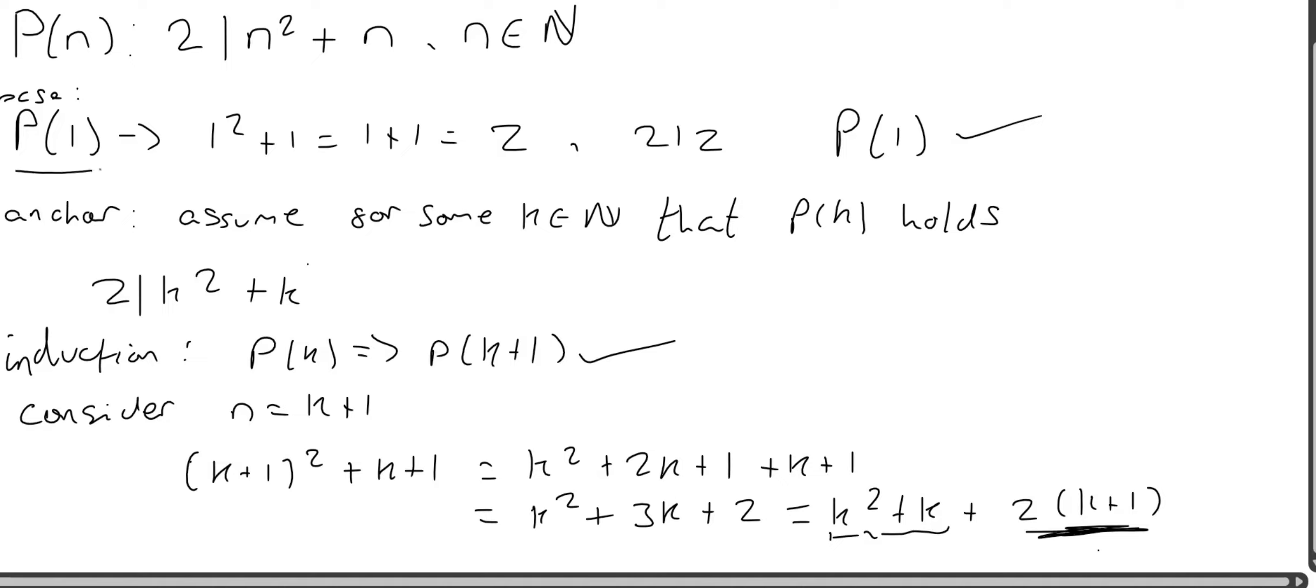And then we know that P(1) is true. So that gives us that P(2) is true, P(3) is true, P(4) is true, and so on. So we've proved that for all n in the natural numbers, this statement P(n) holds true.